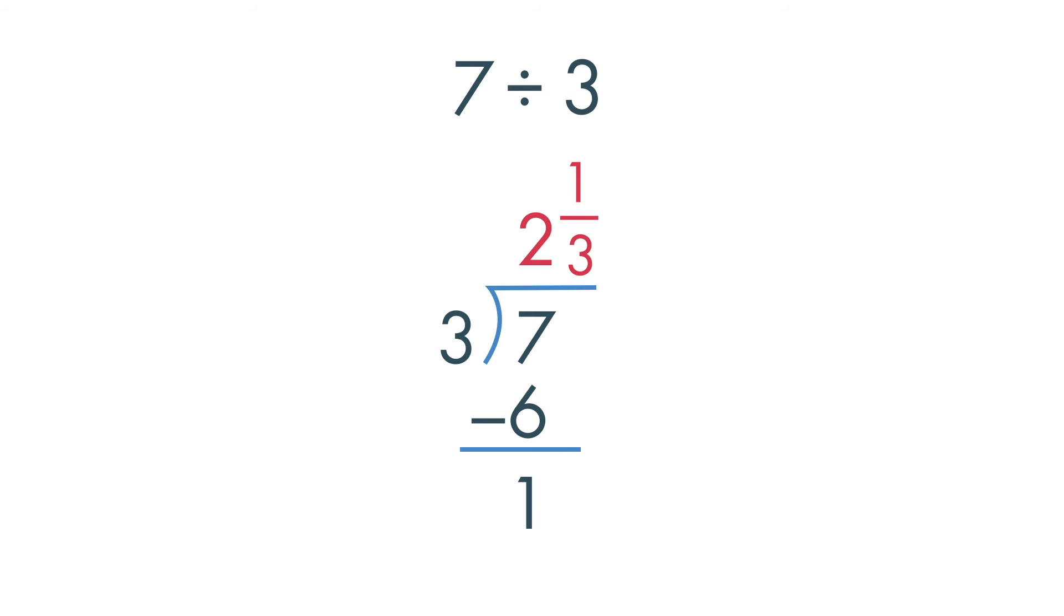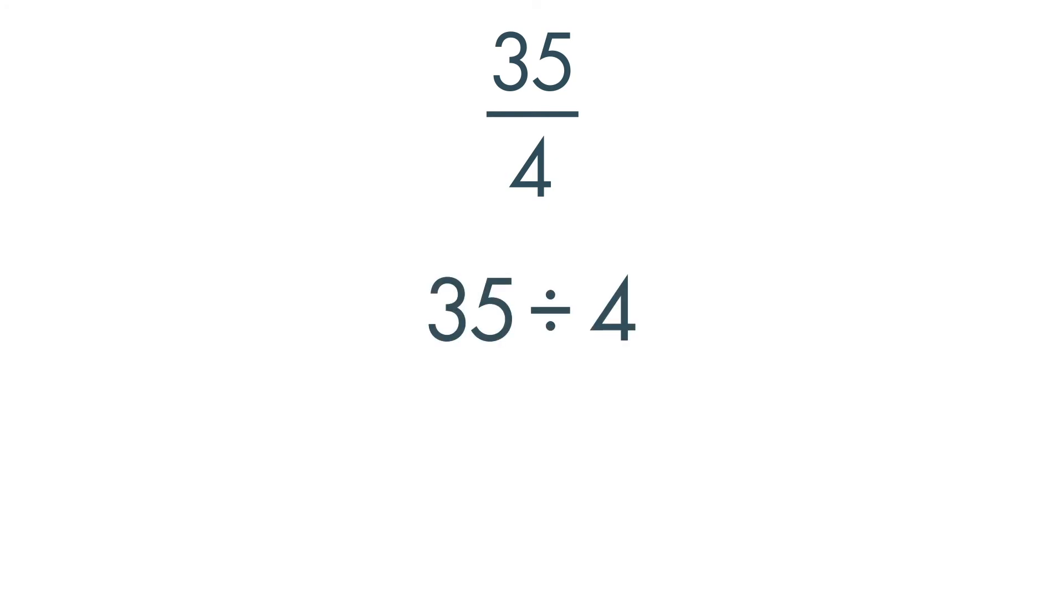Let's write the improper fraction 35 fourths as a mixed number. Divide 35 by 4. We can make 8 groups of 4 with 3 left over. We write the remainder as 3 fourths.